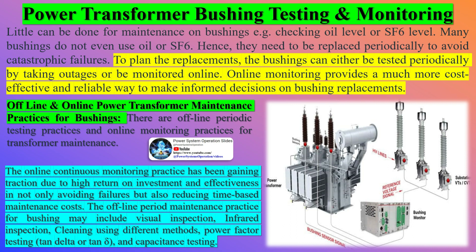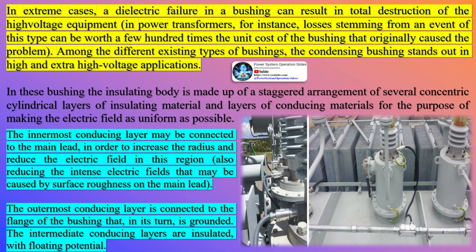How does it work? Online monitoring detects incipient faults that are not detected by offline tests. A fault's development time is typically less than the time between offline test cycles. Online systems measure the performance of the bushing at full operating voltage and temperature.